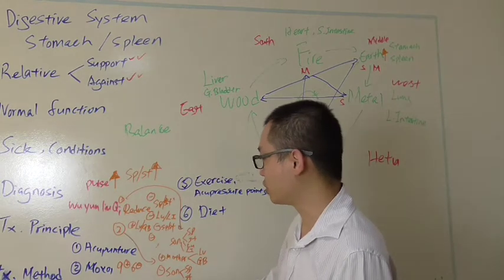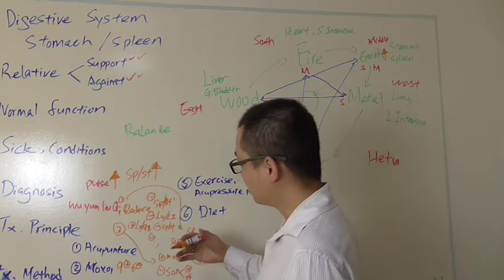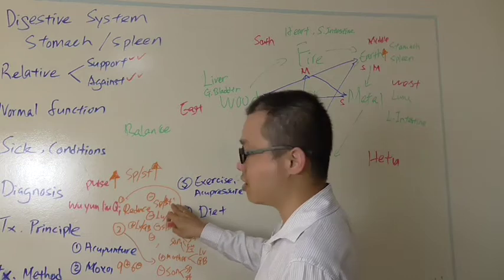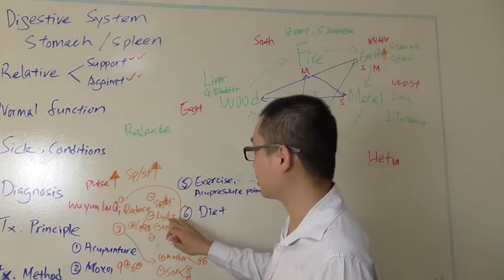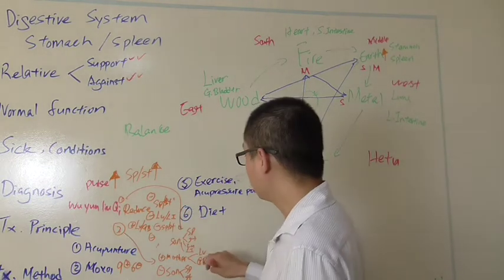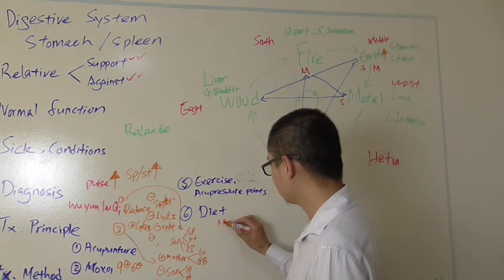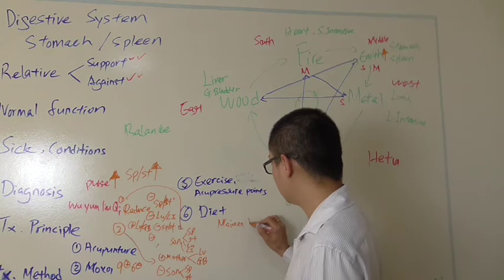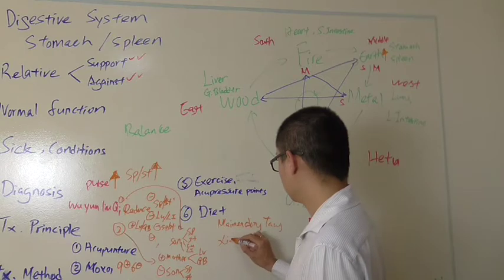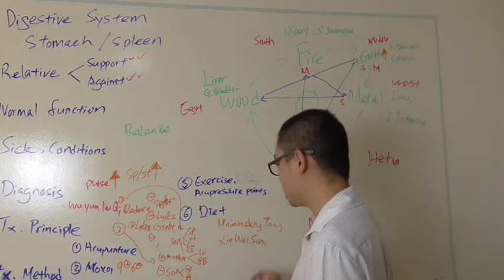Chinese herbs. Yep, we can do Chinese herbs. Follow the principle over here. The Chinese herbs we can do, here. We do stomach and spleen, which is earth. We can do xie huang san, and as well as mai men dong tang. Xie huang san or xie huang san, both are okay. Now I use xie huang san.